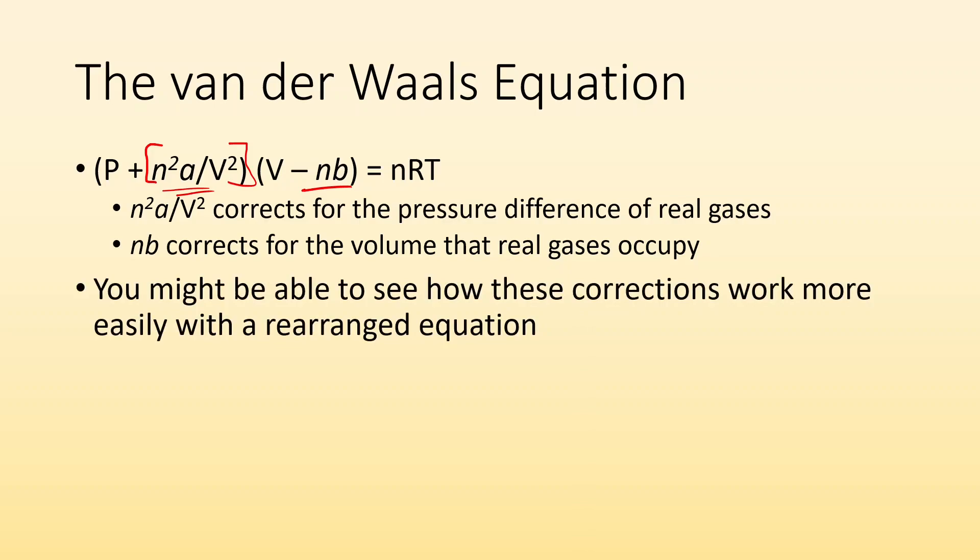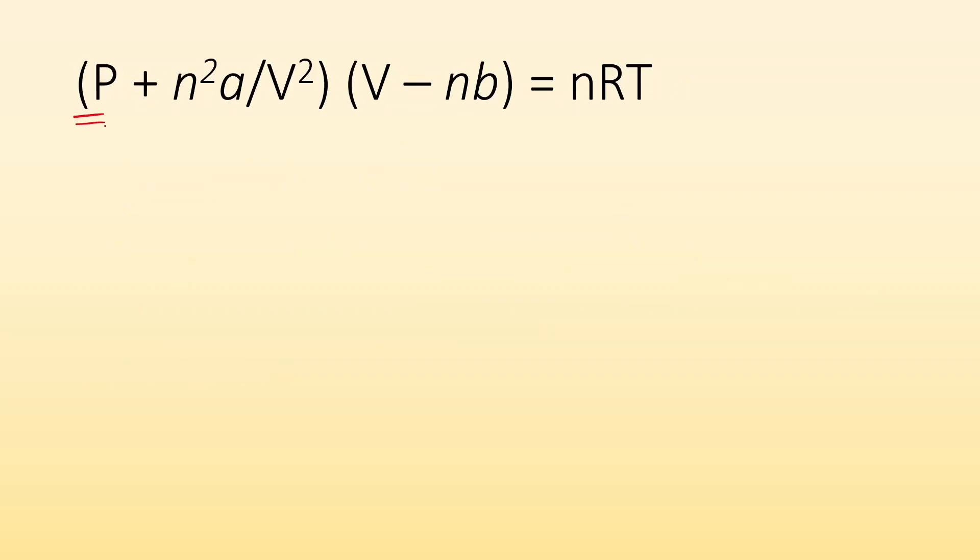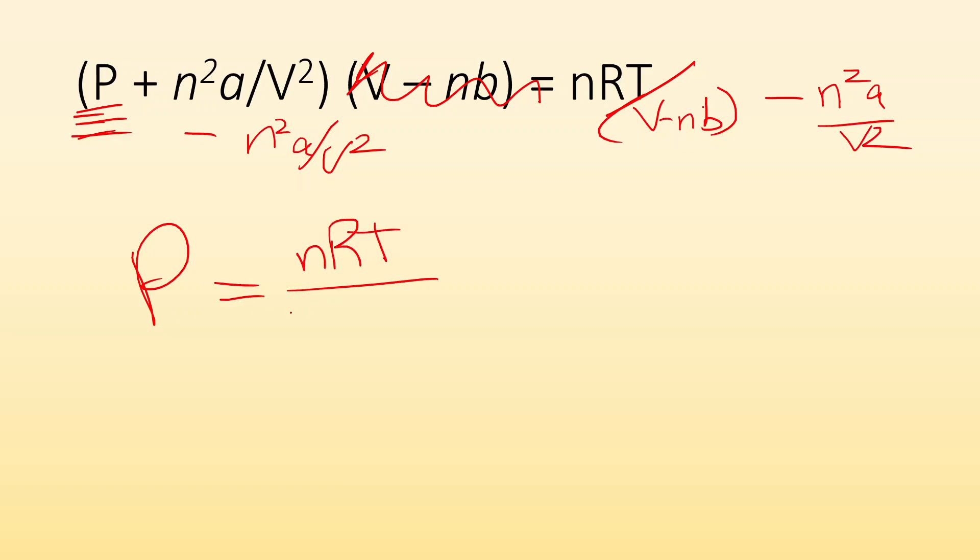You might be able to see how these corrections work more easily if you rearrange the equation. Let's say, for example, let's solve for P. If I want to get P by itself, I have to divide each side by volume minus nb. Now we're going to have to subtract n squared a over v squared. What I end up with is pressure equals nRT over V minus nb minus n squared a over V squared.